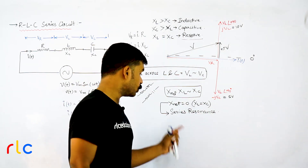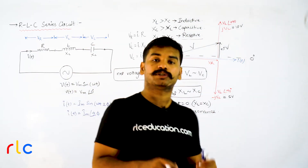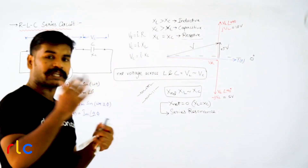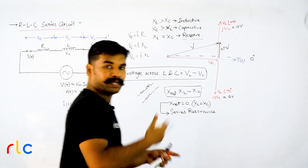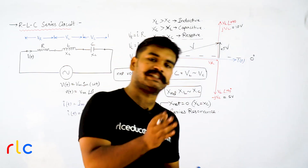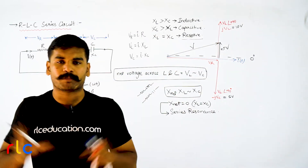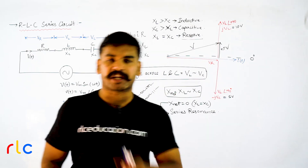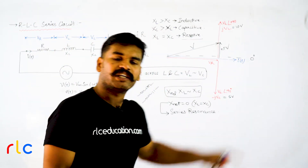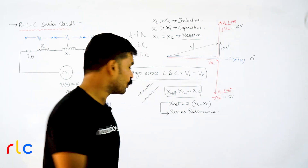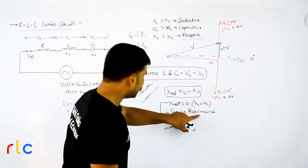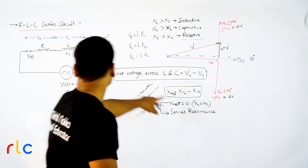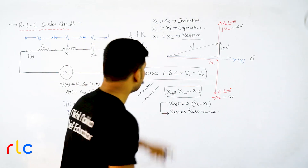In the next upcoming videos, we will very beautifully discuss about resonance — it is one of my favorite topics in circuits. I will relate it with real-life behaviors and explain both series and parallel resonance. For now, just understand: when net reactance equals zero, XL equals XC, and the circuit is resistive in nature.